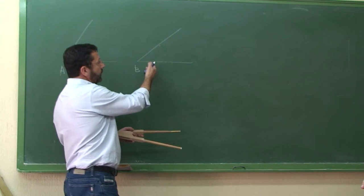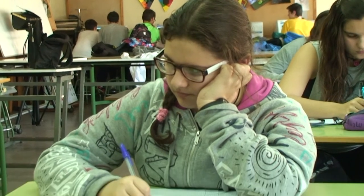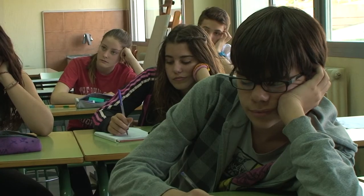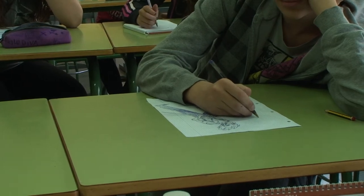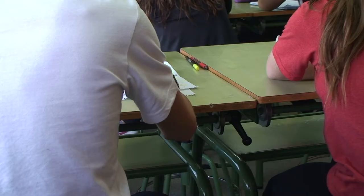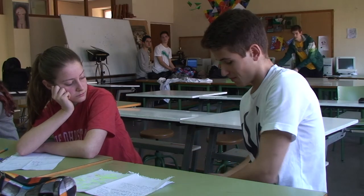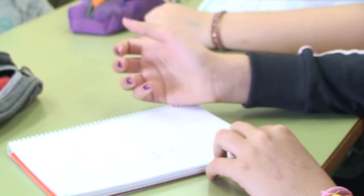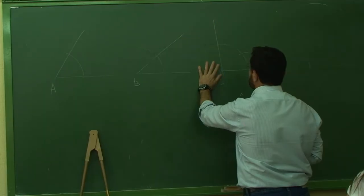Let's see how to draw an angle equal to another angle. For example, angle B. First we draw an arc making the center in the vertex. Then we draw the new angle with the new vertex in B', and with the same angle of compass we draw this other arc.